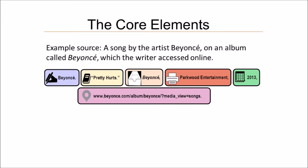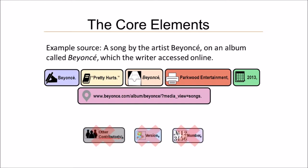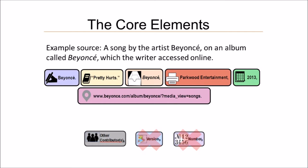You'll find you won't need to use all nine core elements for every source. For example, look at this song from Beyoncé that the writer found on Beyoncé's webpage. In most cases, other contributors, version, and number don't apply to this source. But what if your paper was all about songwriters and you talked about this song's writers at great length in your paper? In that case, the type of person looking up and reading your paper would be really interested in songwriters, so you would want to list the songwriter in the other contributor spot.